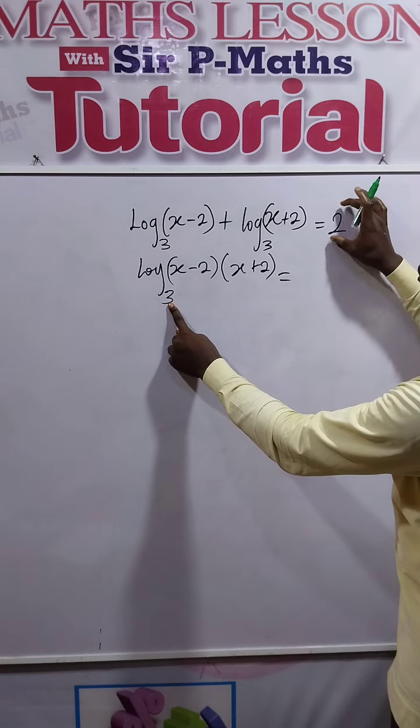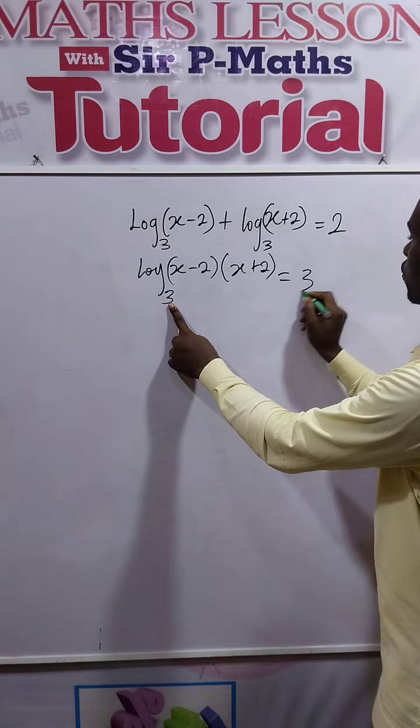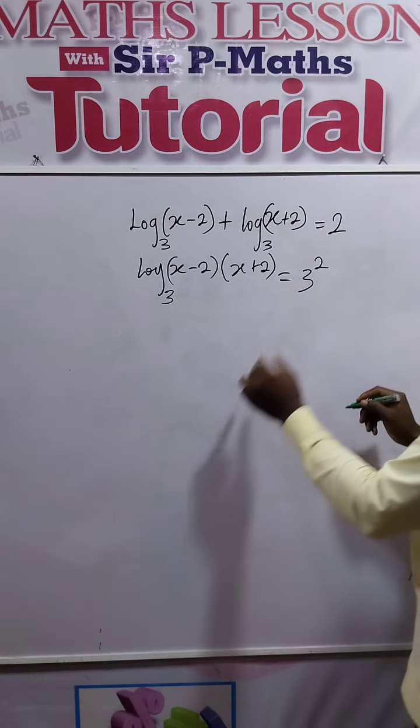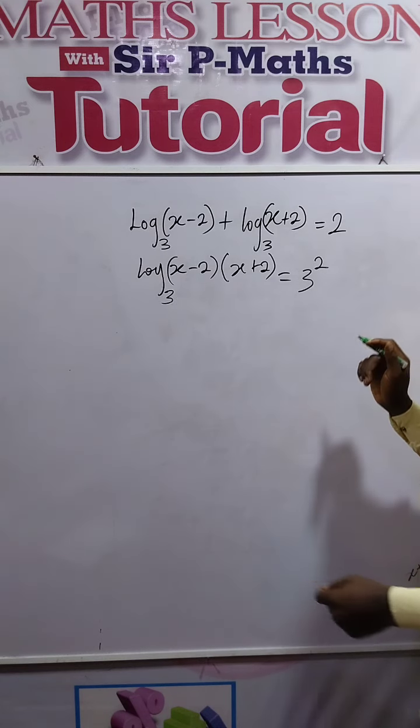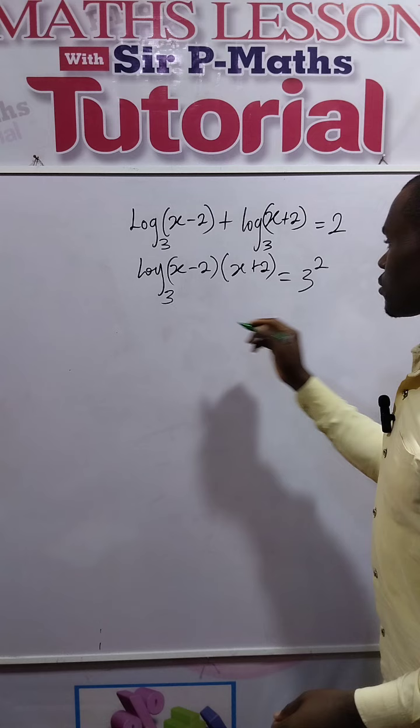3 raised to the power of 2. The base - we have to take the number here as its index. So what do we do next? We're going to equate this to the right-hand side.